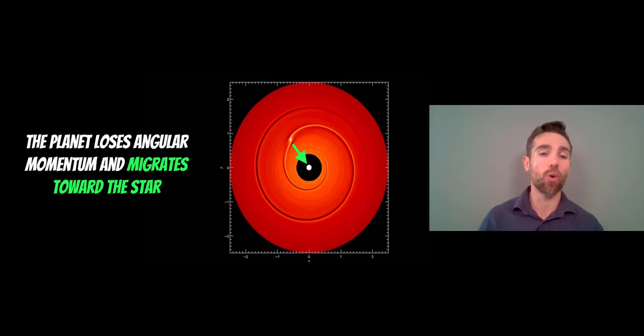For type one, you generally find that you get an inward migration of the planet because there's an imbalance in the inner and outer spiral density wave. And it will nearly always cause an inward migration. There might be some special cases if it's located quite far out in the disk, more towards the edge, but normally type one you get inward migration of the planet because of that imbalance.